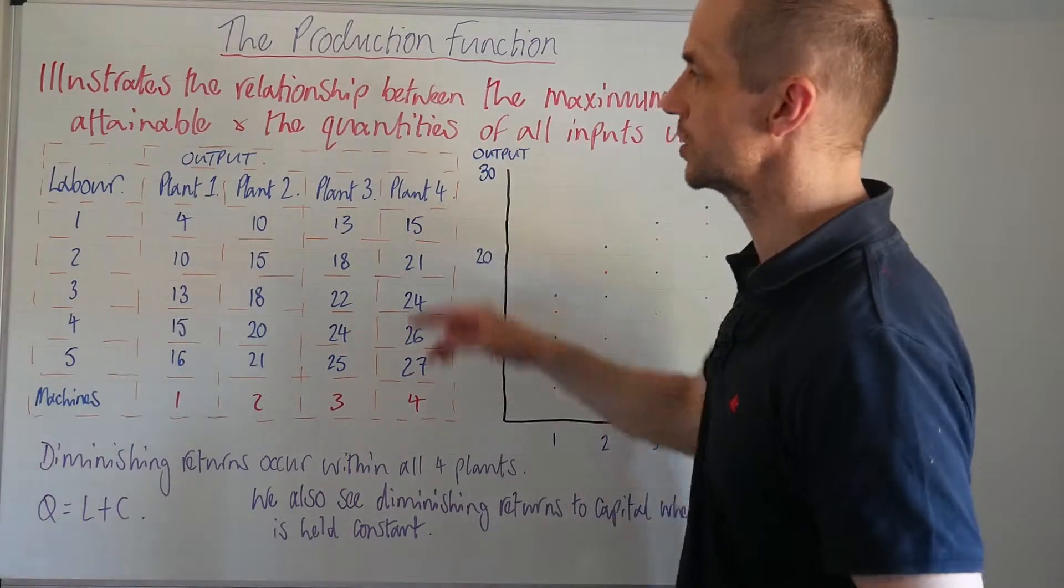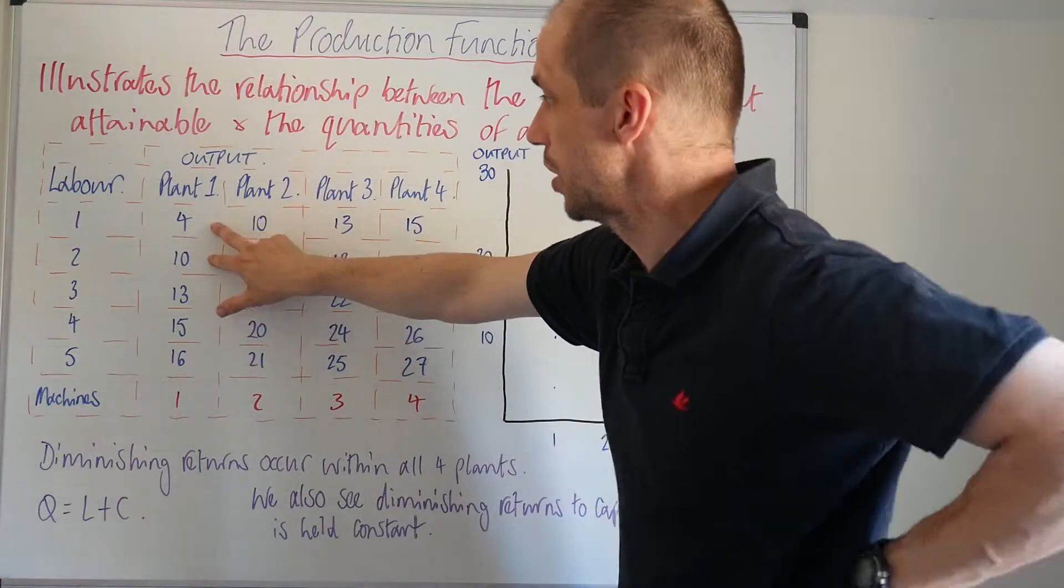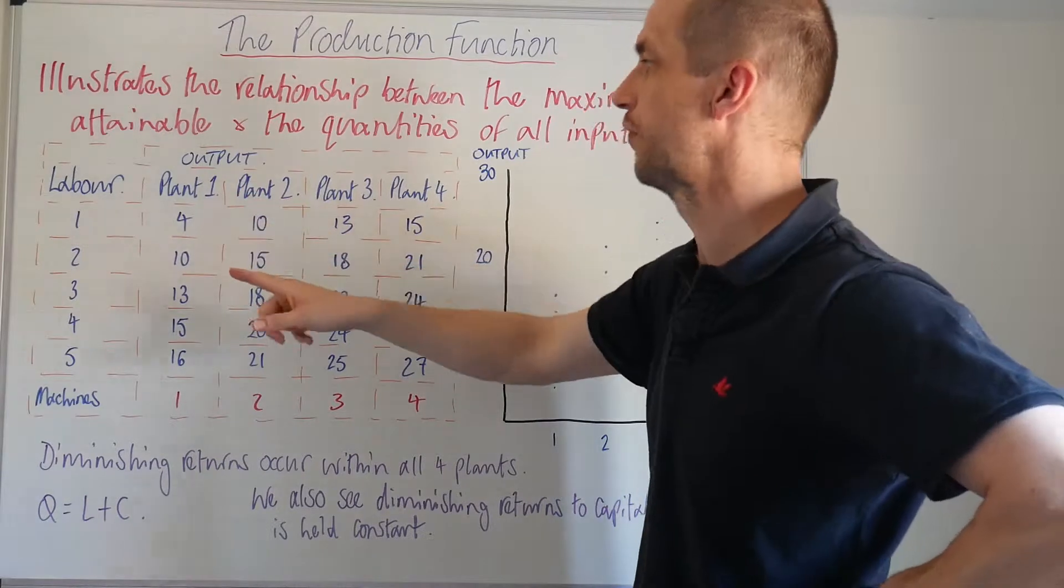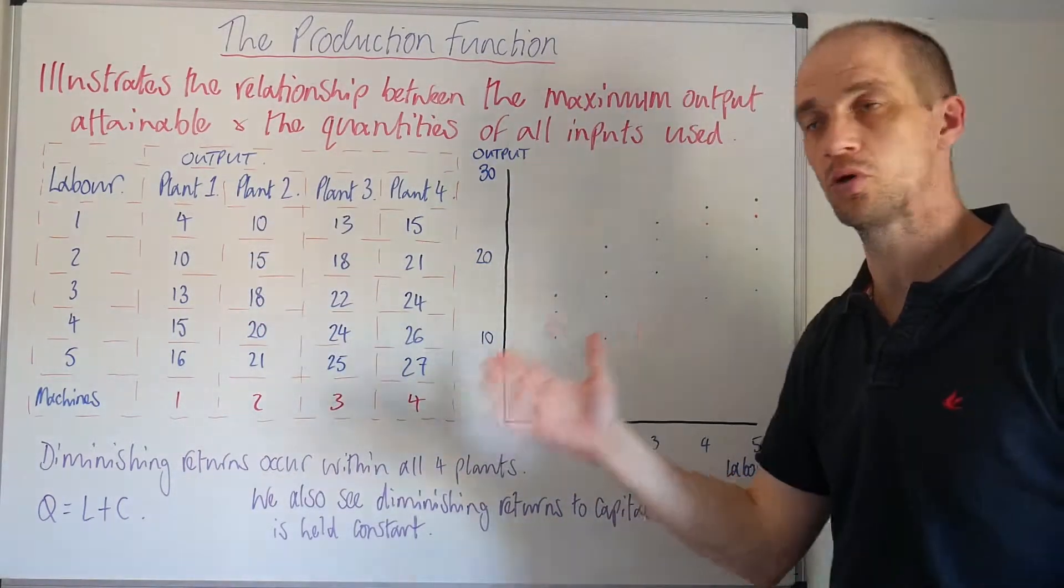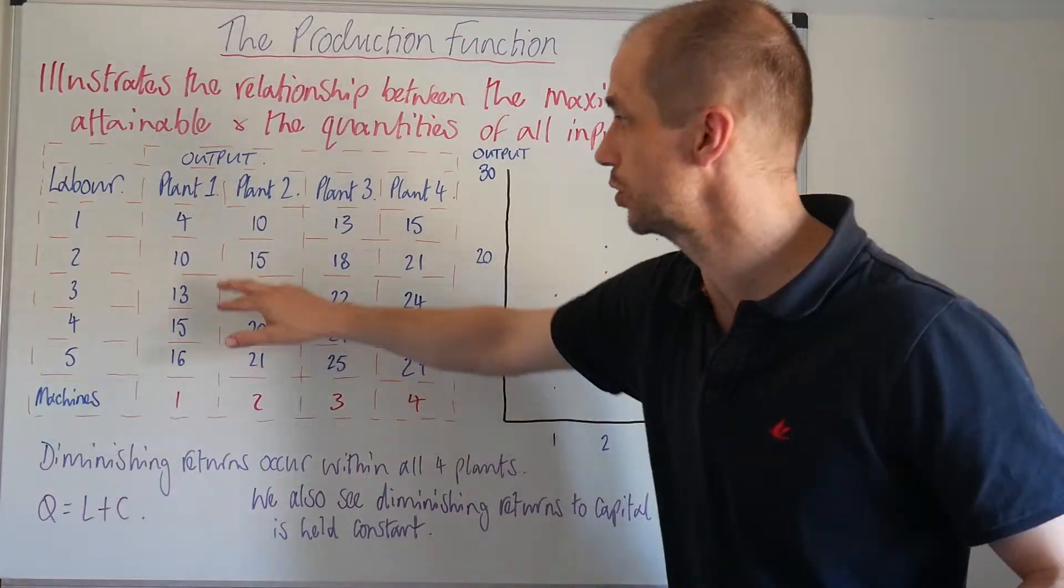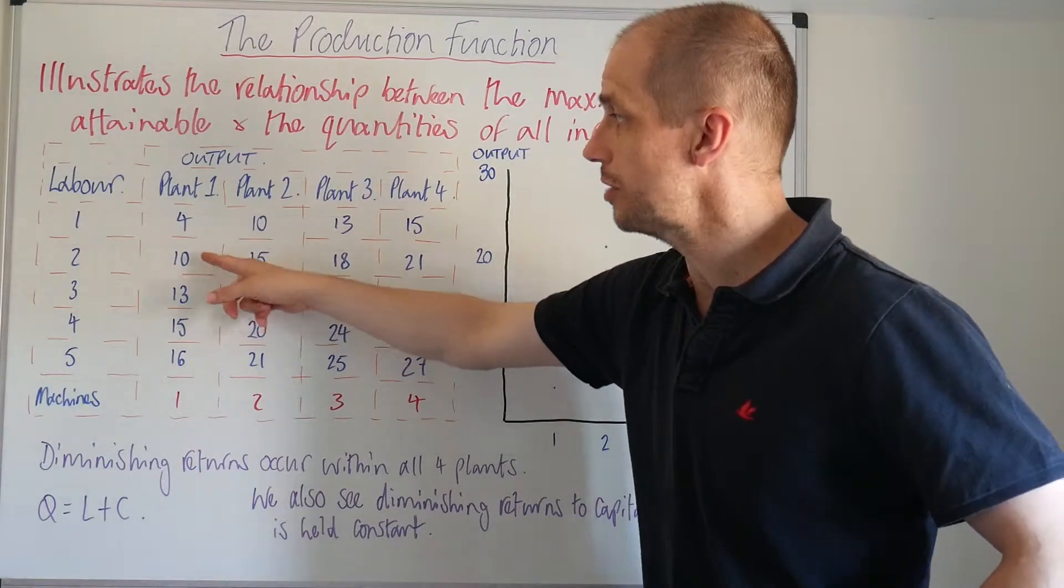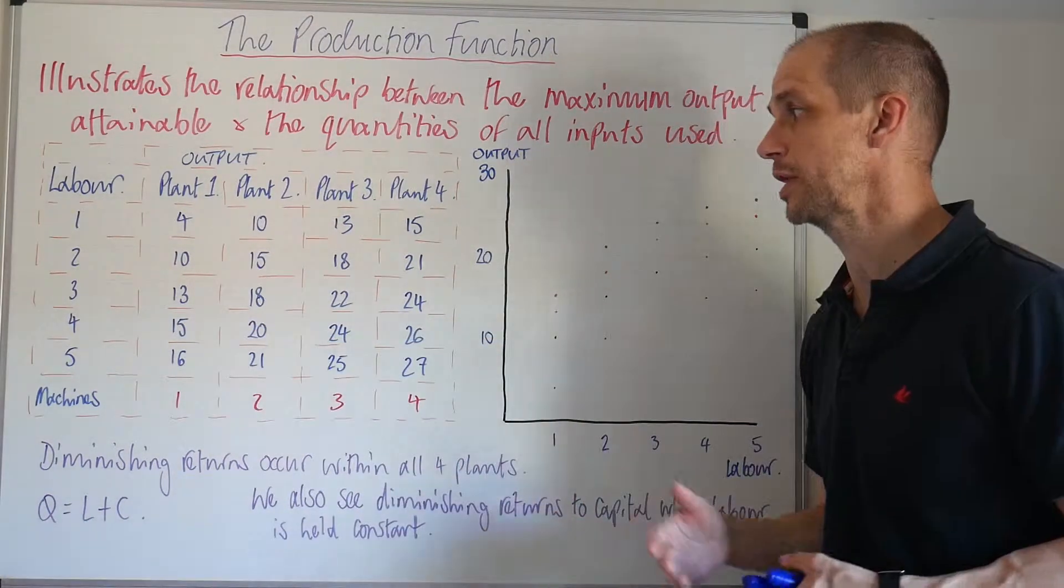So what's interesting here is the typical productivity that we've been working through in the last few lessons where one laborer will produce four units of output, two ten, so we see that increasing marginal return and then of course we experience diminishing marginal returns to labor where additional laborers correspondingly have lower and lower output levels generated.